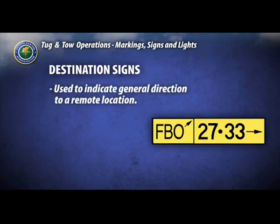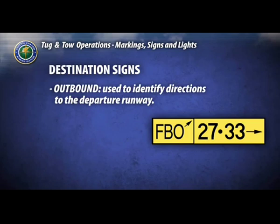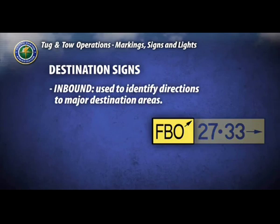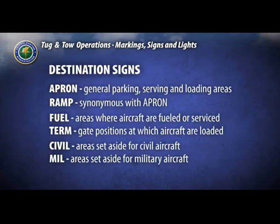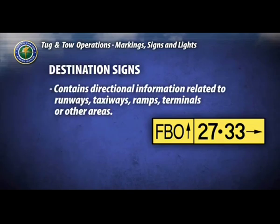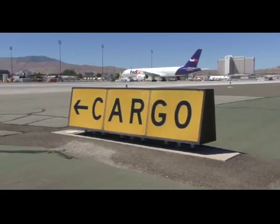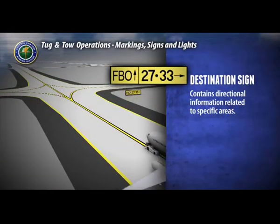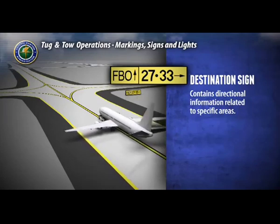Destination signs are used to indicate the general direction to a remote location. Outbound destination signs identify directions to the departure runway, and more than one runway separated by a dot may be indicated. Inbound destination signs indicate the route to major destination areas, with common names and abbreviations. The destination sign contains directional information related to runways, taxiways, ramps, terminals, or other areas and will always have an arrow indicating the direction of the taxi route. For example, the FBO is straight ahead while runways 27 and 33 are to the right.